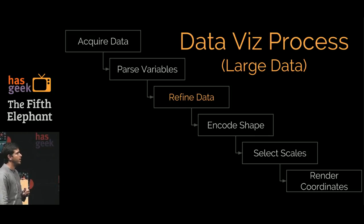You would have an additional step of refining the data, which may either mean filtering or transformation. The process of creating data visualization now is acquire the data, parse the variables, refine the data, encode the shapes, select scales, and then render coordinates.